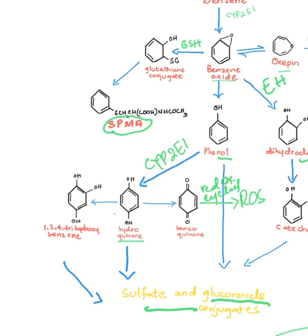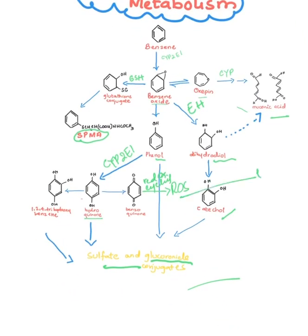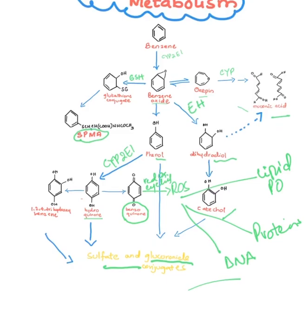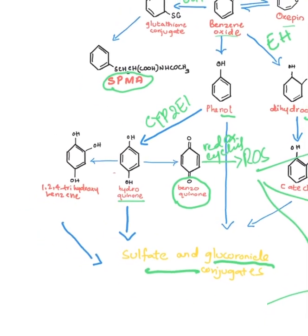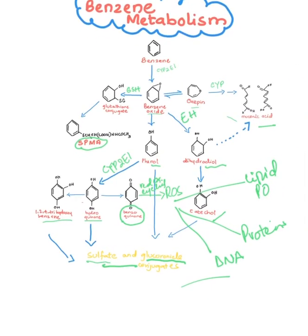These reactive oxygen species are important for toxicity because they can cause lipid peroxidation, react with proteins, and react with nucleic acids like DNA to cause mutations. Benzoquinone is therefore a toxic metabolite in liver cells or hepatocytes. Meanwhile, hydroquinone and catechol can be excreted as sulfate and glucuronide conjugates, making them non-toxic.